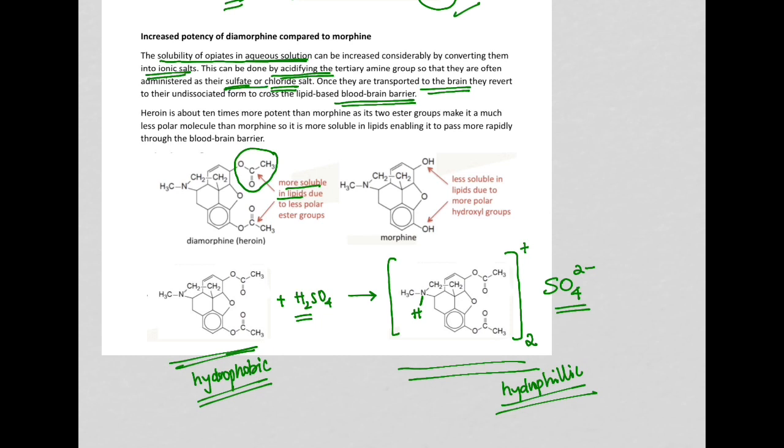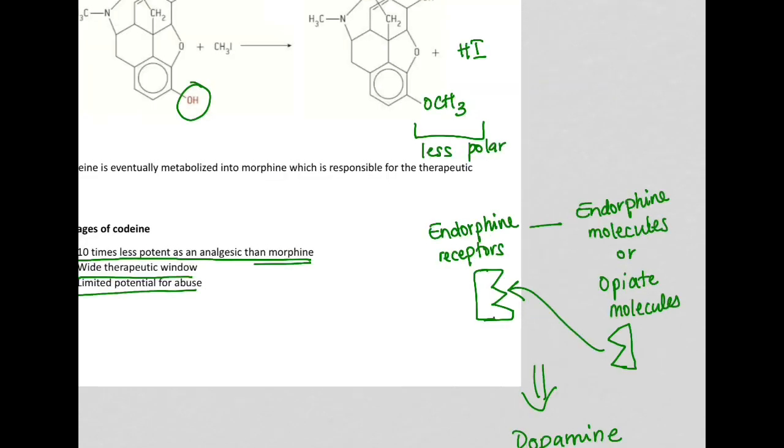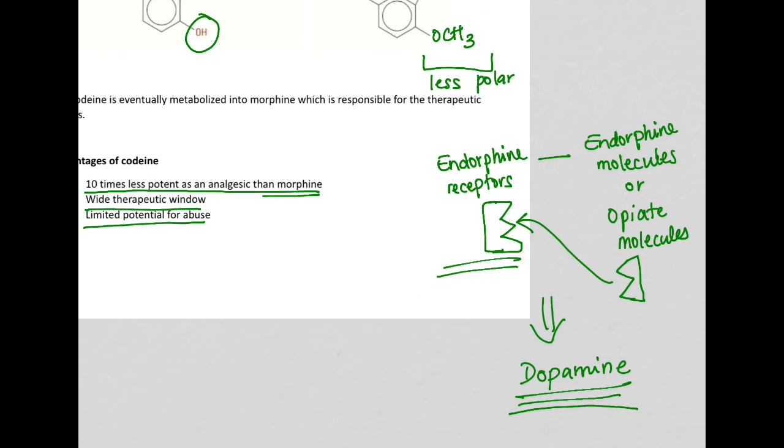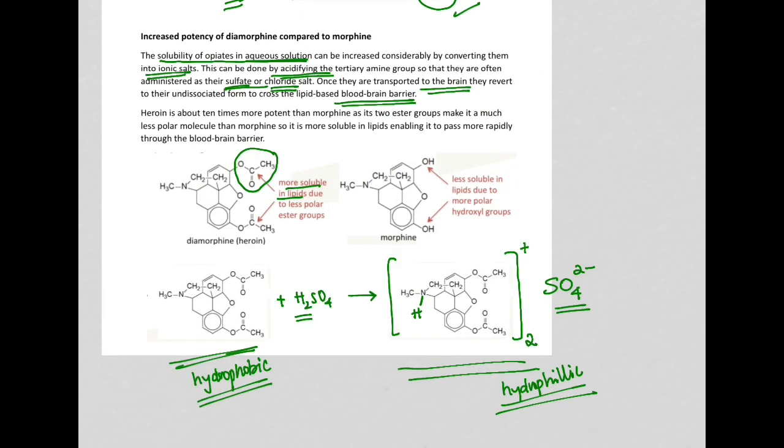Once heroin enters the brain, it's going to bind to one of those endorphin receptors and will immediately produce dopamine, the feel-good factor. However, the effect is only temporary. The effect is very short-lived in comparison to morphine. Heroin is 10 times more potent than morphine as the two ester groups make it much less polar than morphine, so it's more soluble in the lipid layer. It travels to the brain much faster in comparison to morphine.